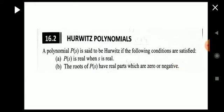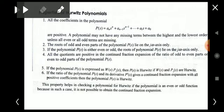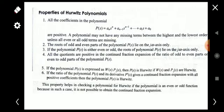Those are the basic conditions. There are six properties of Hurwitz polynomials, which may appear as short answer questions. The first property is that all the coefficients in the polynomial must be positive — that is, coefficients a_n, a_(n-1), a_(n-2), and so on must all be positive. A polynomial may not have any missing terms between the highest and the lowest order.